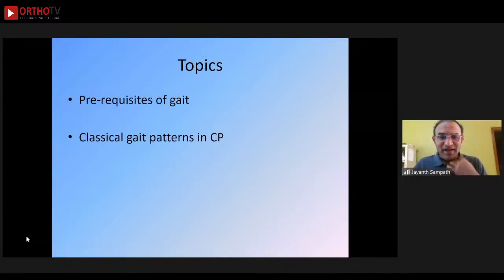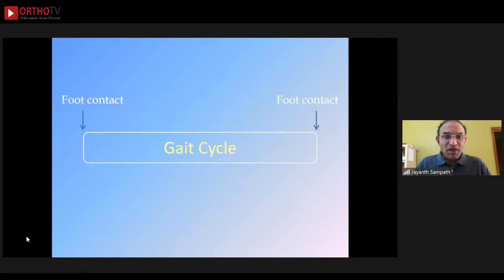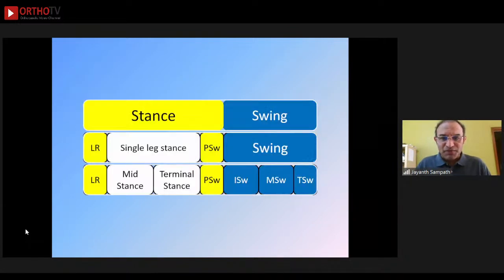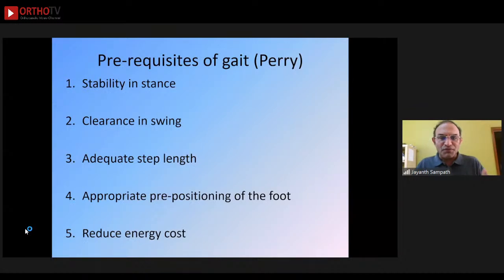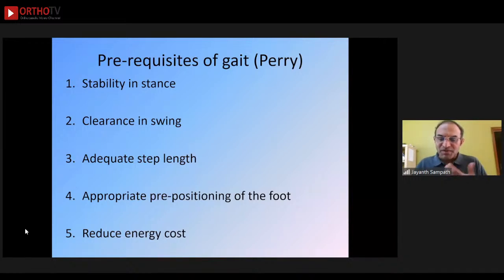Looking at prerequisites of gait and classic gait patterns in CP — the gait cycle is foot contact to foot contact: loading response, mid-stance, terminal stance, pre-swing, initial swing, mid-swing, and terminal swing. This should roll off your tongue. Dr. Perry's five prerequisites: stability in stance, clearance in swing, adequate step length, appropriate pre-positioning of the foot, and reduced energy cost. Practice these so that when examiners ask you, you have the confidence to answer.